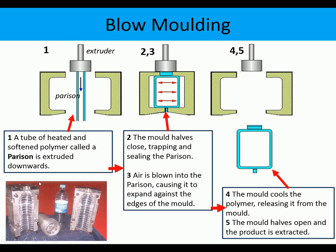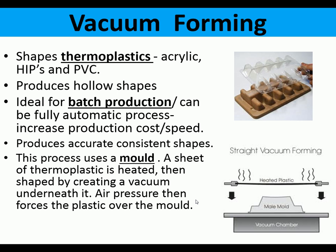In the blow molding process, a parison — a tube of heated plastic — comes down from an extruder. The mold halves close together, trapping and sealing it. Air is then blown in from the top to inflate the bottle like a balloon until it hits the edges of the mold. The mold cools, opens, the bottle is extracted, and any extra parts are cut off. This is a very quick mass production process.